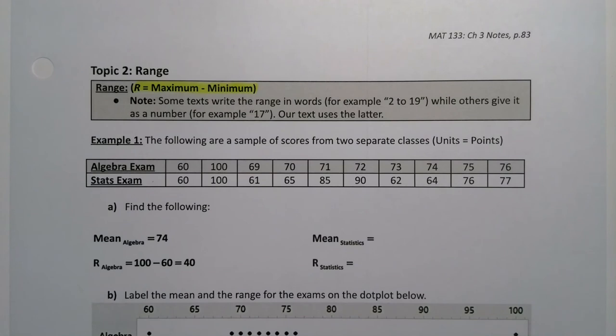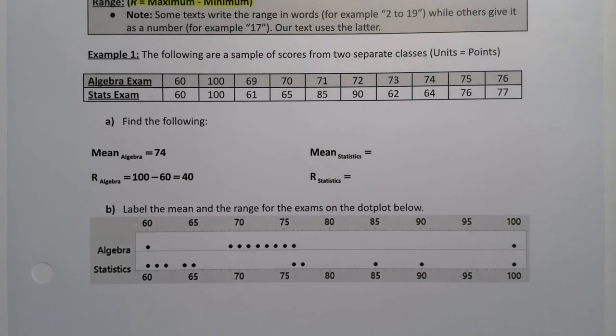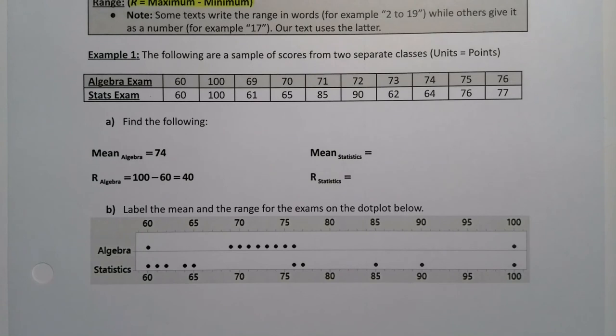Now some books, some textbooks write it in words. They'll say, you know, our data set goes from 2 to 19, but ours and many other books will write it as a number 17. So our text uses that latter, which is 17. Alright, so we are going to look at two data sets side by side.